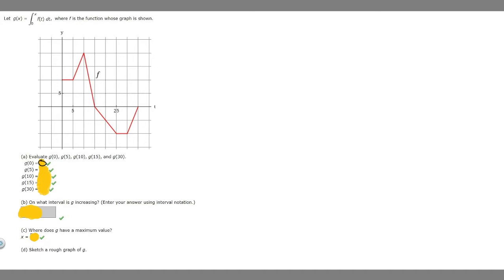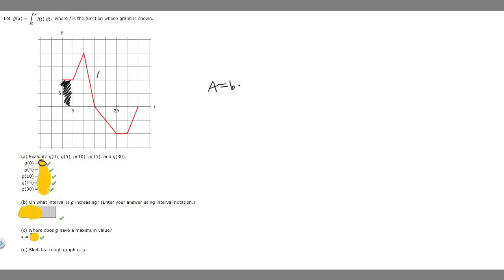Let's do g of 5 next. We've got to find the area under the curve from 0 to 5. If I shade in that area, we can see it's a rectangle. Area equals base times height — base is 5, height is 10. So area equals 5 times 10, which is 50. The answer to g of 5 is 50.